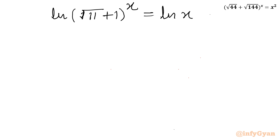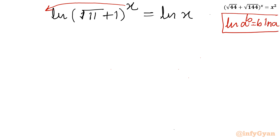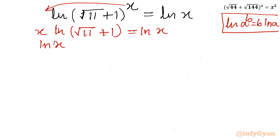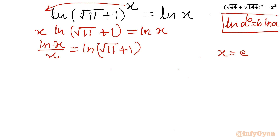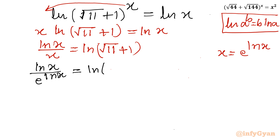Using the logarithm exponent property — ln(a^b) = b·ln(a) — I will be writing: x · ln(√11 + 1) = ln(x). Now I will take x to the RHS, giving: ln(x) / x = ln(√11 + 1). Now we know that x = e^(ln x), so in the denominator of the LHS I will write e^(ln x), giving: ln(x) · e^(−ln x) = ln(√11 + 1).